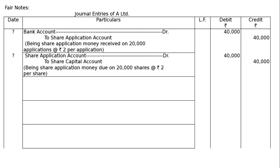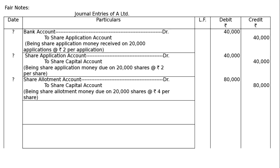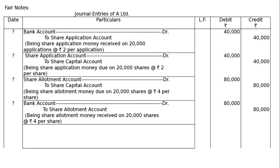Next is allotment due: Share allotment account debited to share capital account. Being share allotment money due on 20,000 shares at the rate of Rs. 4 per share — 20,000 into 4 = Rs. 80,000. This is the due entry for allotment money. Then receipt: Bank account debited to share allotment account — Rs. 80,000 in debit and credit. Being share allotment money received on 20,000 shares at the rate of Rs. 4 per share — 20,000 into 4 = Rs. 80,000. Full allotment was received.